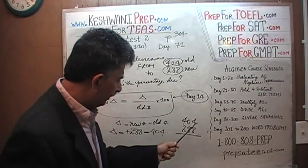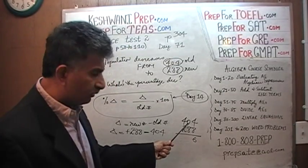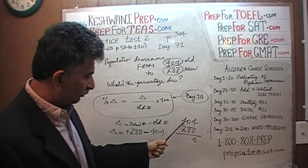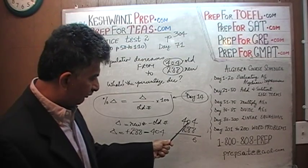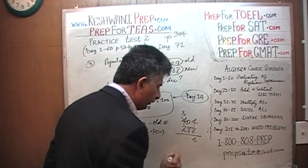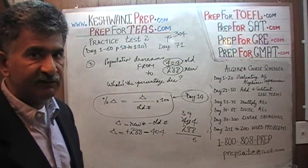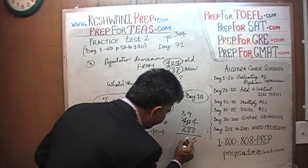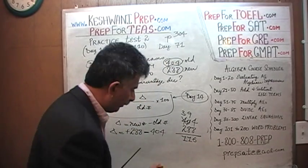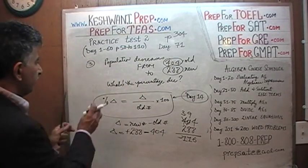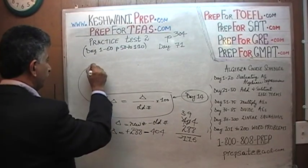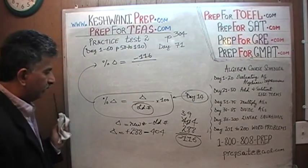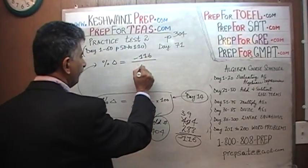So 4 minus 8: we need to borrow. The zero borrows from the 4, so the 4 becomes 3, and the zero becomes 10, then we borrow from the 10 so it becomes 9, and the 4 in the ones place becomes 14. 14 minus 8 is 6. 9 minus 8 is 1. 3 minus 2 is 1. So the change is 116 — now we stick a negative sign in front of it. So the percentage change equals negative 116 over the old number, which is 404, times 100.